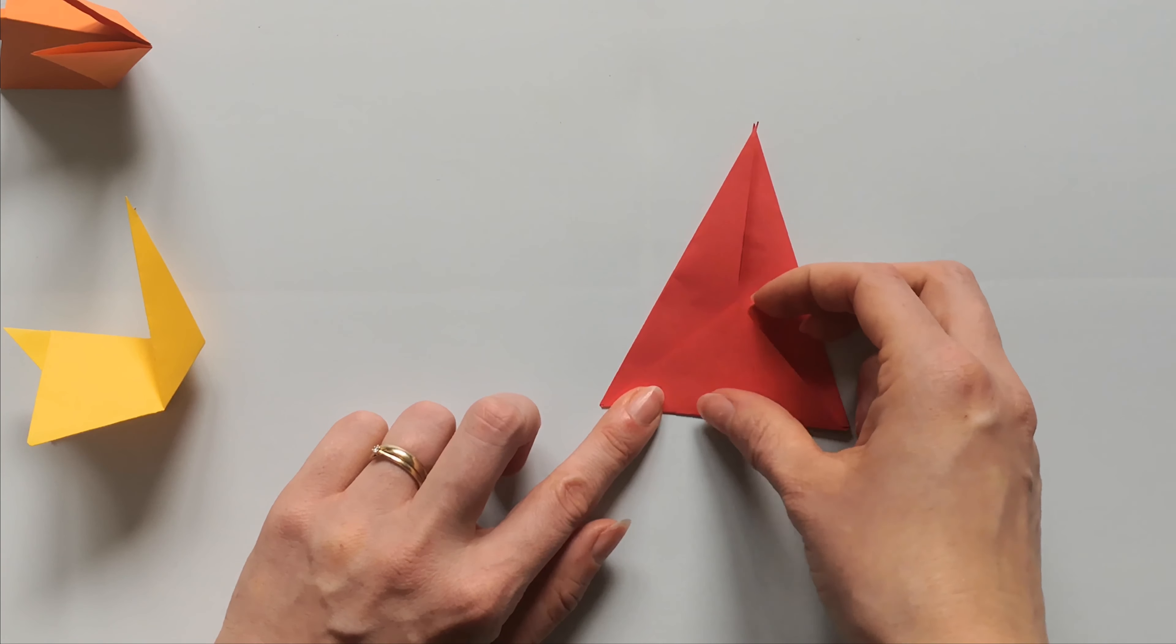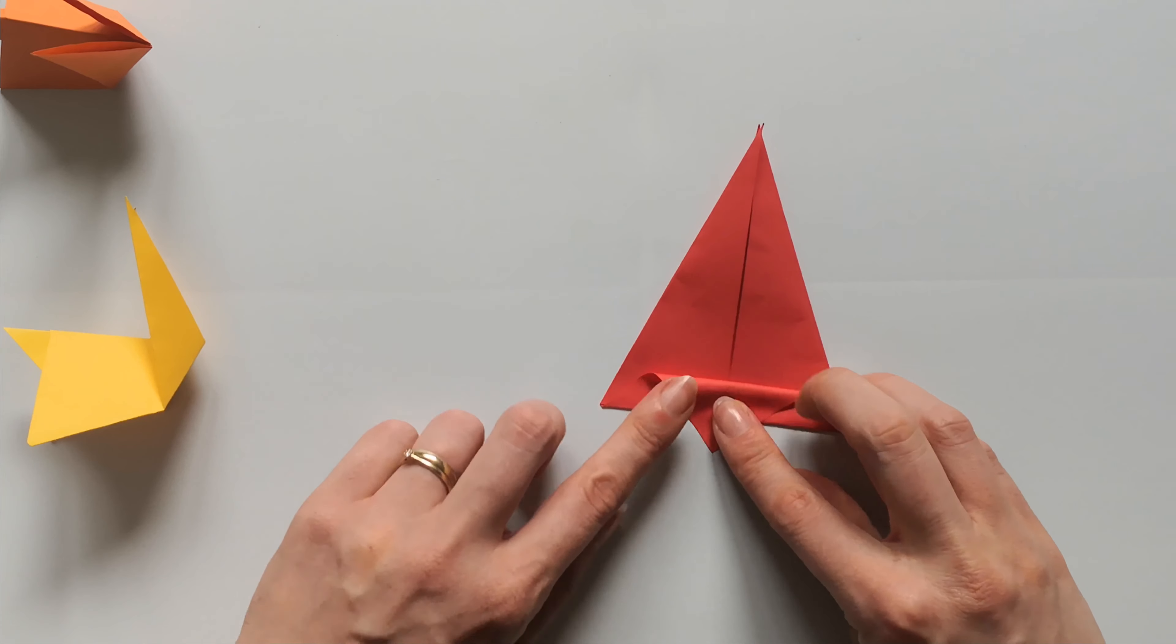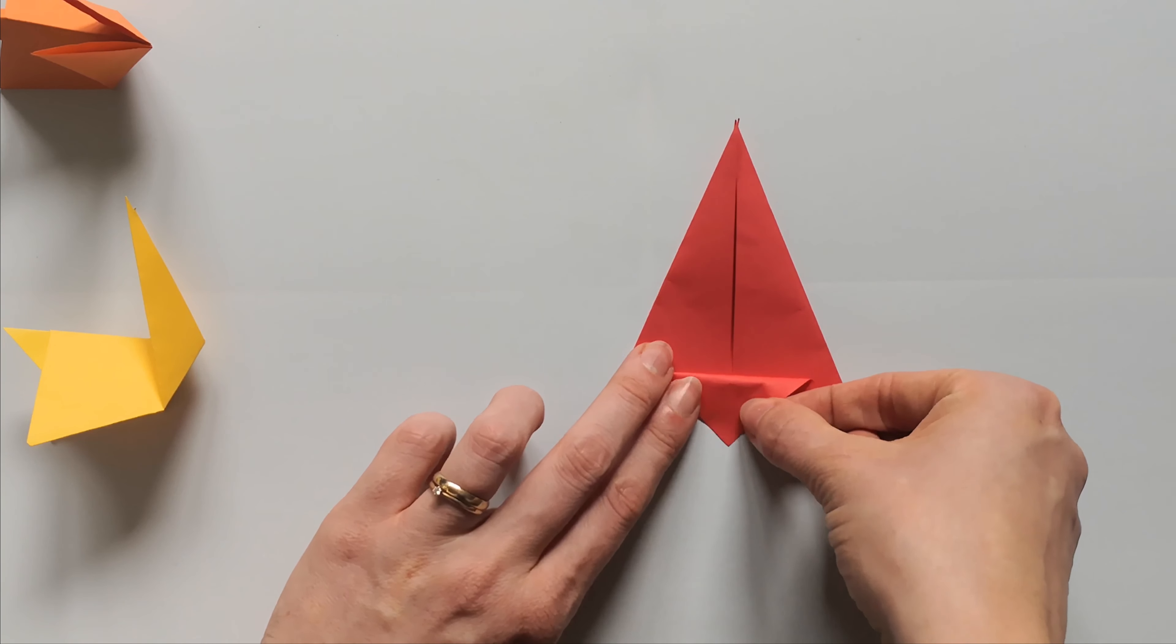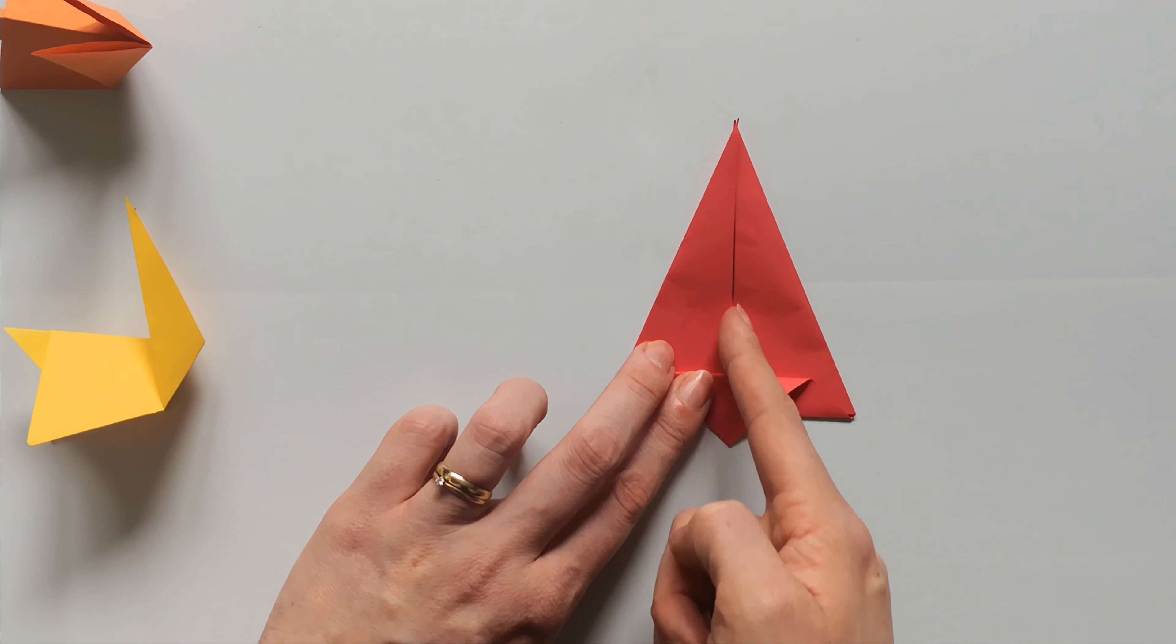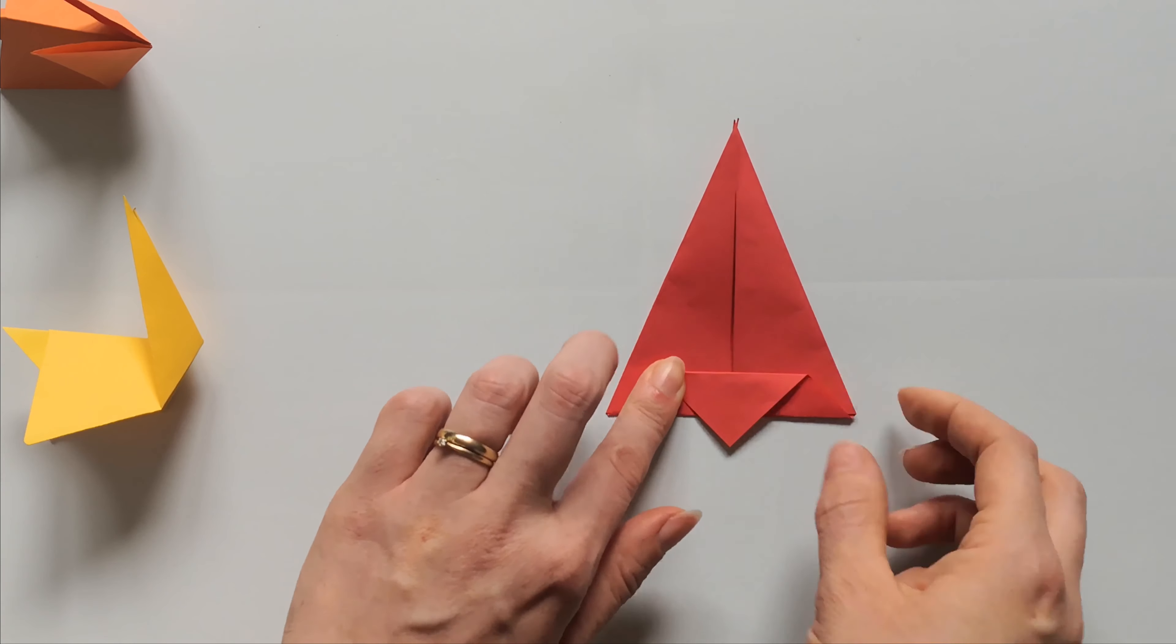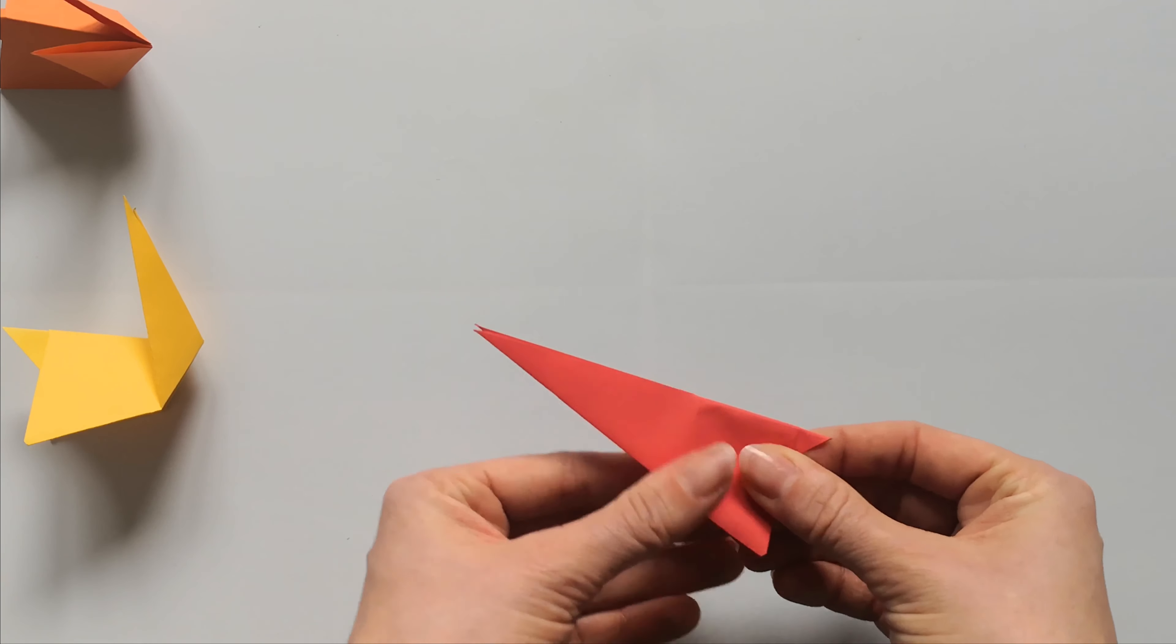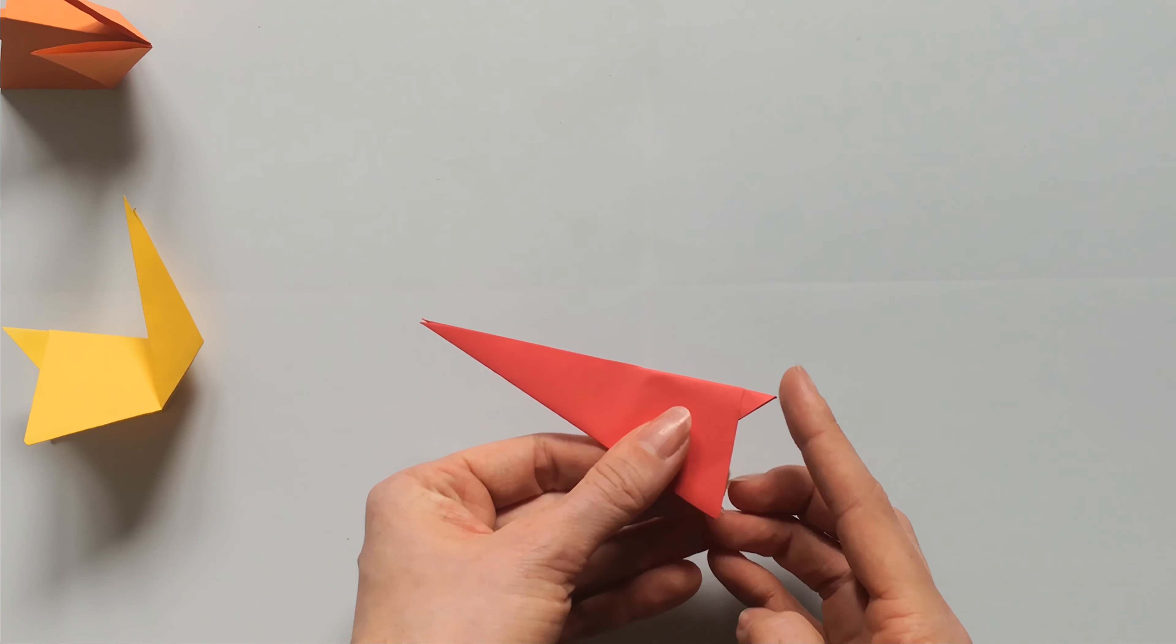And now, again, take this upper layer and fold it over, so that this point is looking over this line. Just make sure that it is straight here. Like so. Now, close it together. And you've made your tail of the bunny.